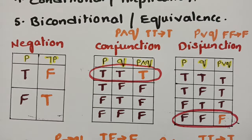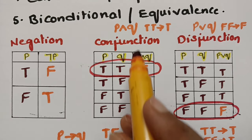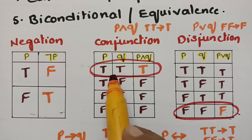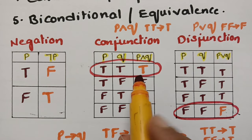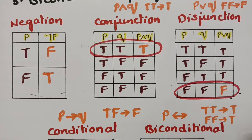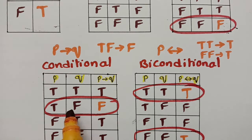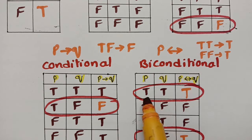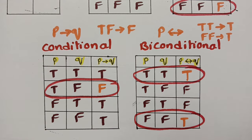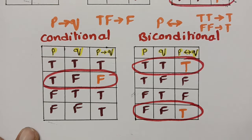For negation: true gives false, and false gives true — negation is very simple. For conjunction: if there are two truths, the result is also true. For disjunction: if there are two false values, the result is false. For conditional: true and false gives false. For biconditional: two truths or two identical values give true, and the rest are all opposite statements. These are the five truth tables which you have to learn.